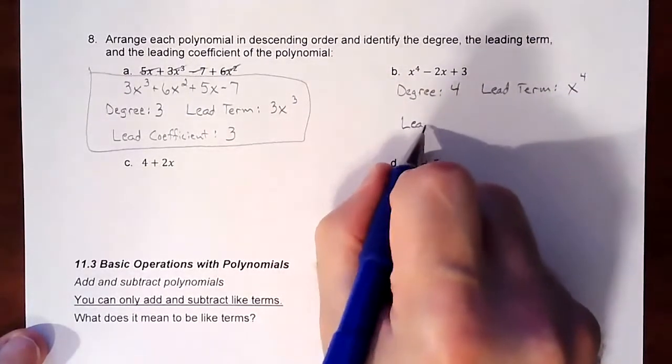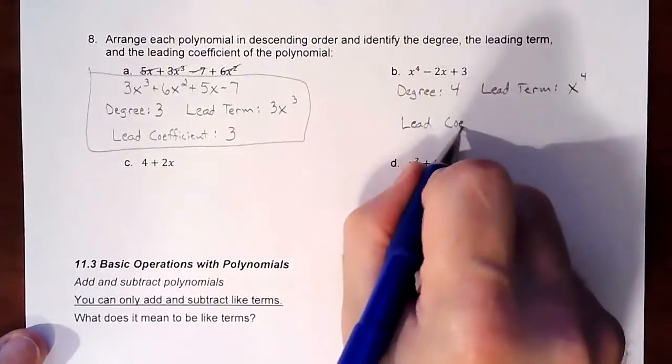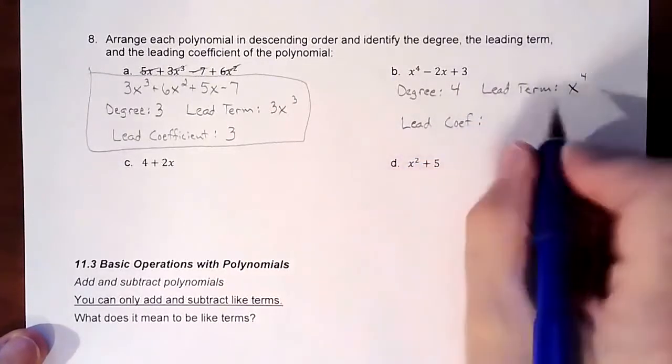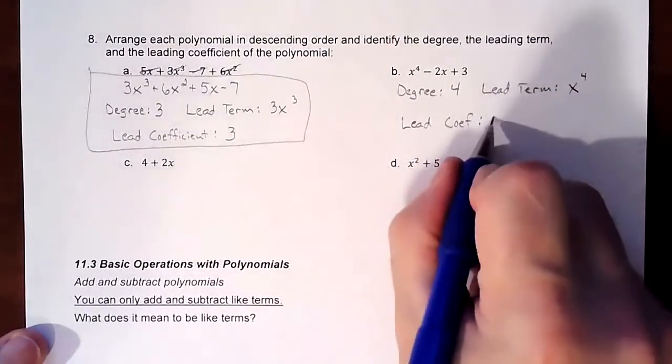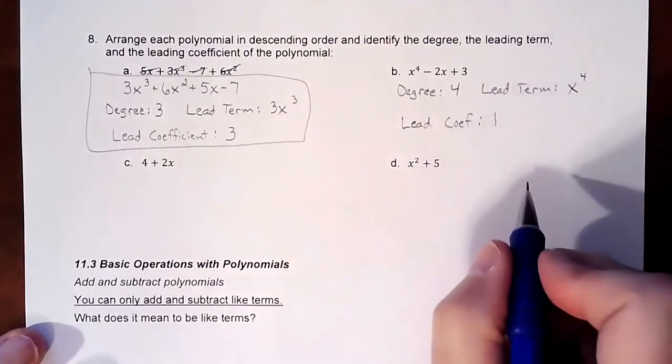The lead term is this whole x to the fourth piece, and then our leading coefficient, there's always something in front of it. So that number would be a one on this one. So our leading coefficient would be a one.